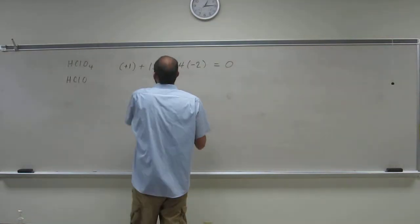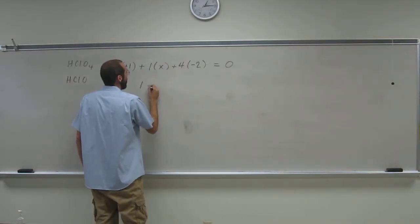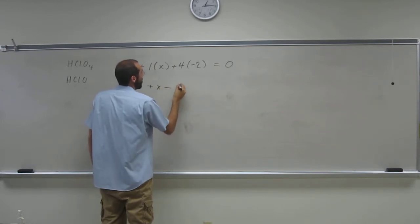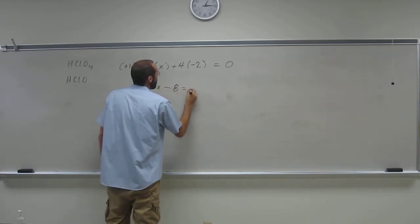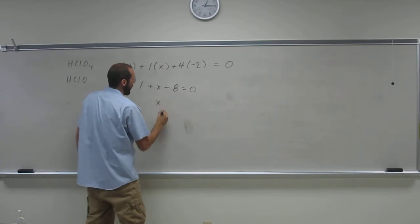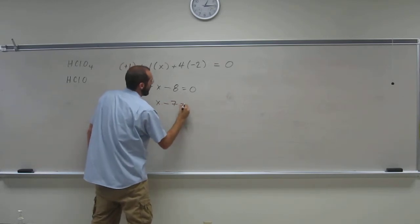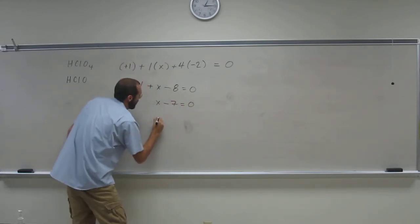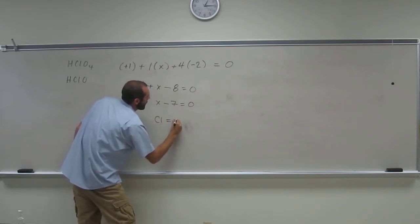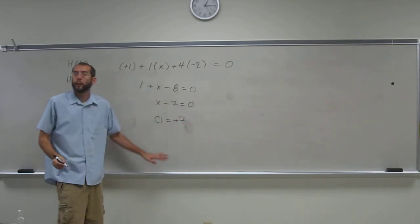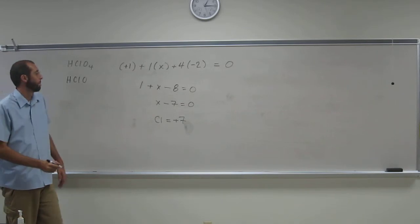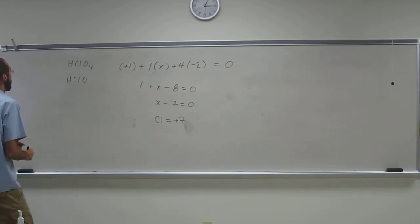Okay, so let's go ahead and figure this out. So we've got one plus x minus eight equals zero. So x minus seven equals zero. So the oxidation number of chlorine, in this case, is plus seven. Okay, you see that?